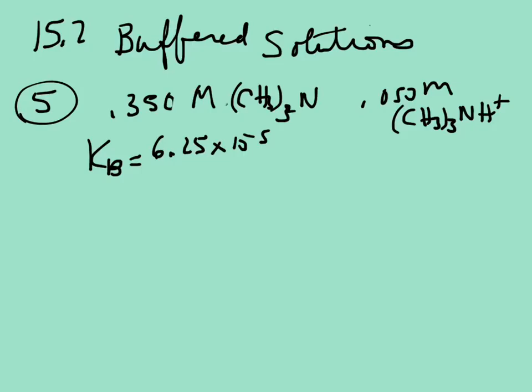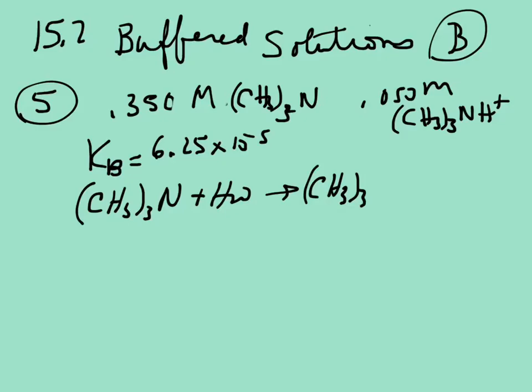So let's do that. So we have CH3N plus we're going to add it to water, and then this is basic, so this is a base, and we're going to get CH3NH+ plus we're going to get OH-. So that's our conjugate acid.